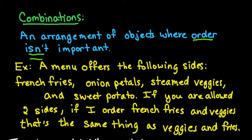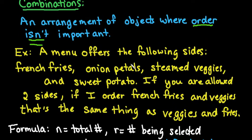So what we have for this, I'm just going to show you an example of a combination. If a menu offers the following sides: french fries, onion petals, steamed veggies, and sweet potato, if you are allowed two sides, if I picked french fries and veggies, that's the same thing as ordering veggies and french fries. So the order doesn't matter in which I pick them. I still get the same two sides, whether I order the veggies first or the french fries first.